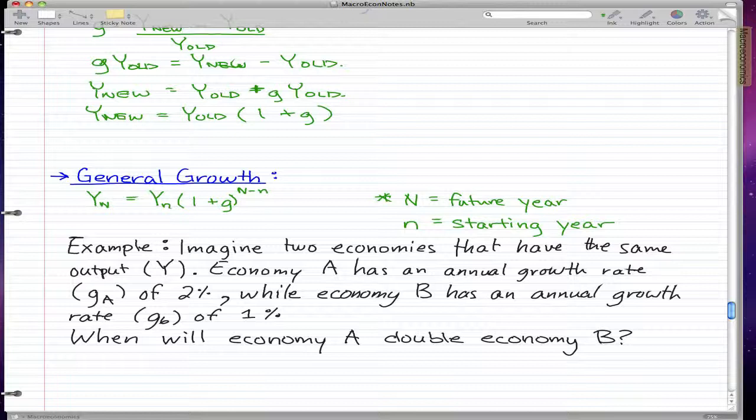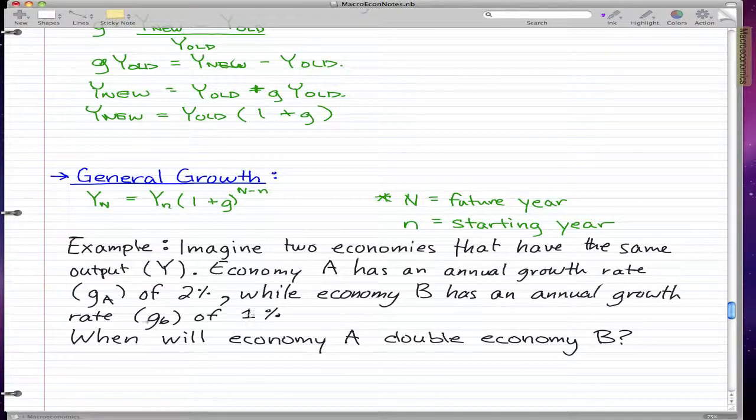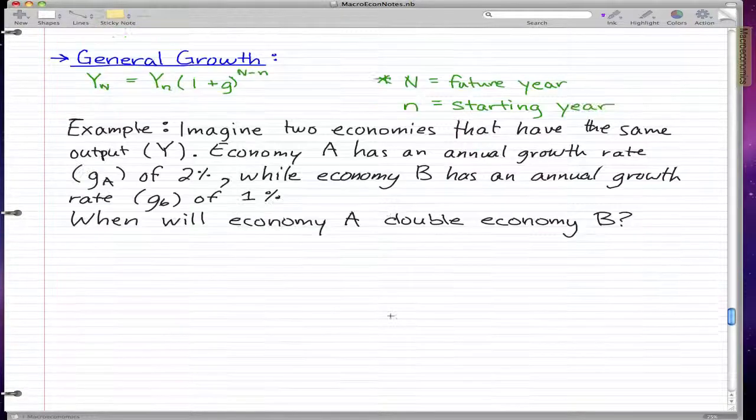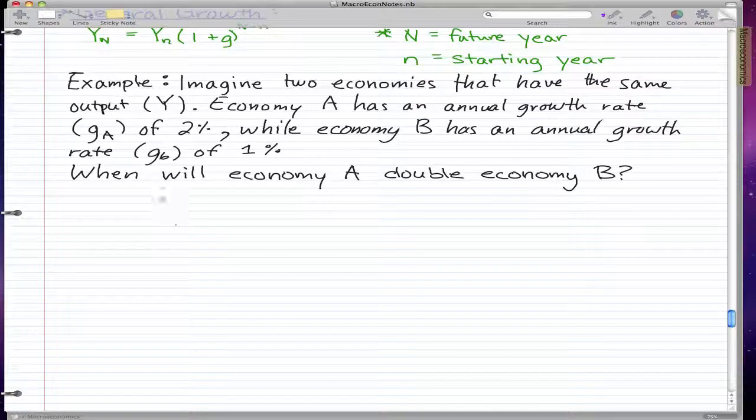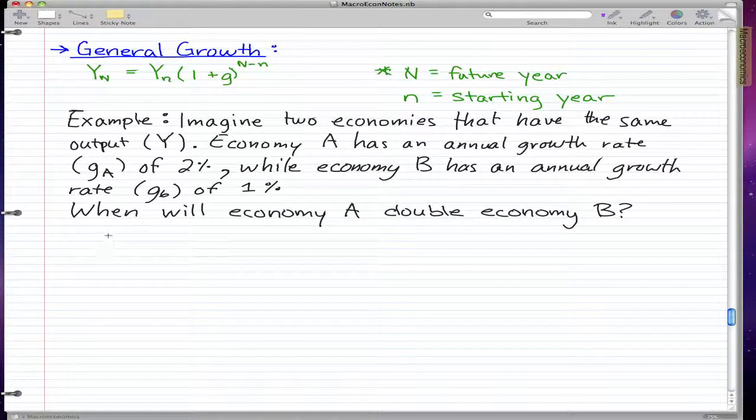So the example for today is imagine that two economies have the same output Y. Economy A has an annual growth rate of 2%, while economy B has an annual growth rate of 1%. When will economy A double economy B is what we want to know. So we'll just use our general growth formula.